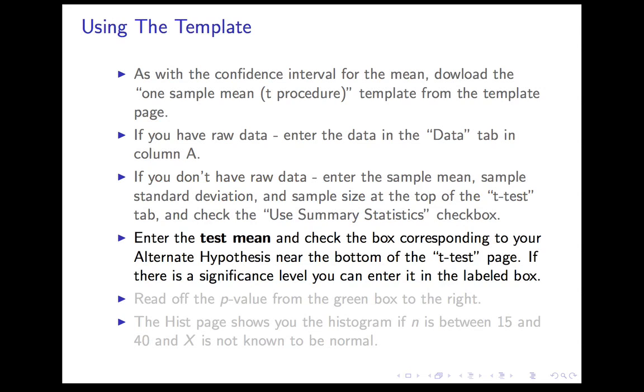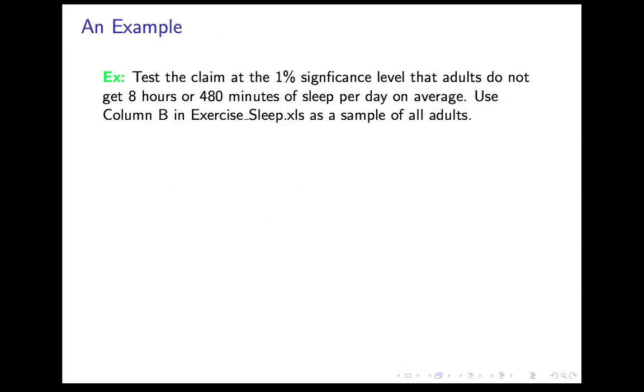Finally, very important, you enter the test mean, which is from your null hypothesis, and you check the box that corresponds to your alternate hypothesis near the bottom of the t-test page. If there's a significance level, you can enter the significance in. Then you read off the p-value from the green box to the right. If n is between 15 and 40 and you don't know X is normal, you can look at the histogram page to get a look at the histogram.